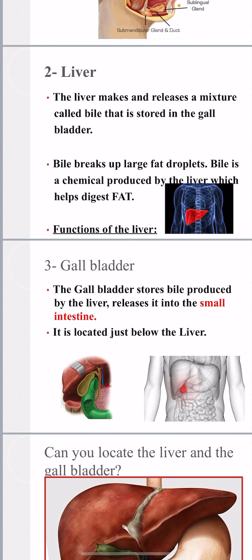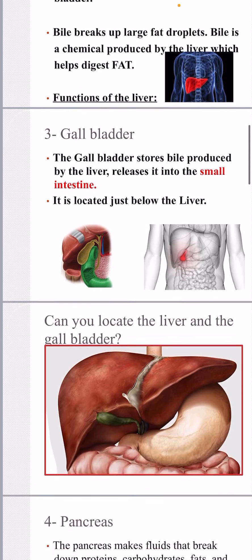The second accessory organ is the liver. The liver releases a mixture called bile, which is produced and synthesized inside the liver. Bile is used to help in the digestion of fat — just imagine dropping bile onto a piece of fat and it dissolves. The liver produces a high amount of bile, which is then stored inside the gallbladder and released when needed.